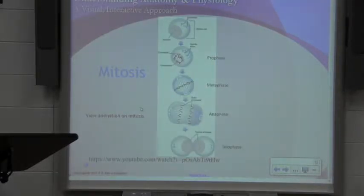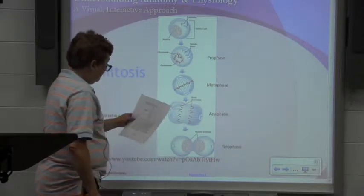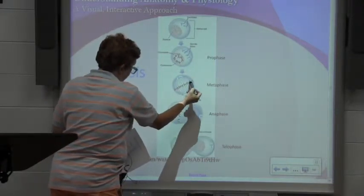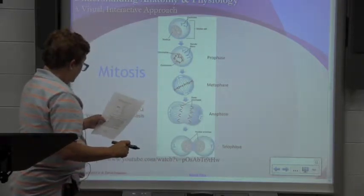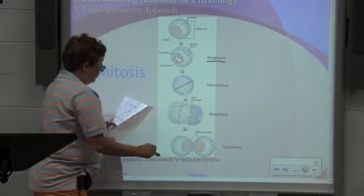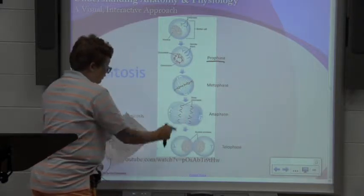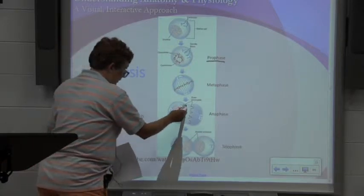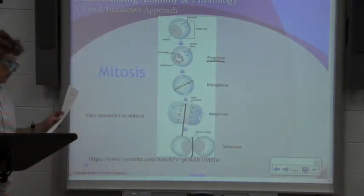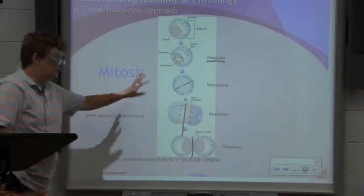Mitosis occurs when cells divide and you end up with two distinct cells, each with their own genetic material. Two strands of chromosomes form. In prophase, chromosomes condense. In metaphase, spindle fibers begin to attach so they roll into the middle. In anaphase, two chromosomes begin to appear. In telophase, two distinct cells begin to form — those are identical daughter cells. There's a mitosis rap that helps you learn those phases.